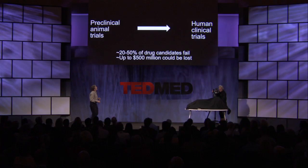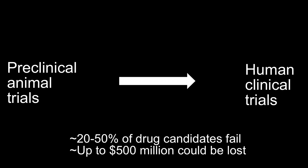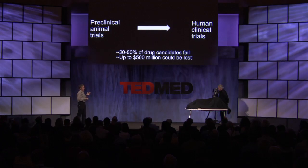There are probably many reasons for that, but there is one point in the drug development process where many drugs fail: the transition from preclinical animal trials to human clinical trials. About 20% to 50% of drugs fail at this point, and the cost loss could be up to $500 million — representing about a third to half of what is needed today to bring a drug to market.